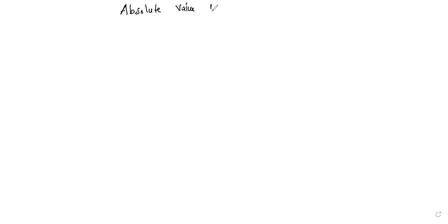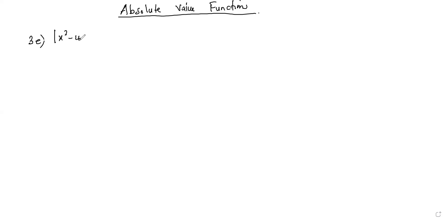We are continuing with absolute value functions, so we are now going to 3e. Solve the following: x squared minus 4x equal to 12.